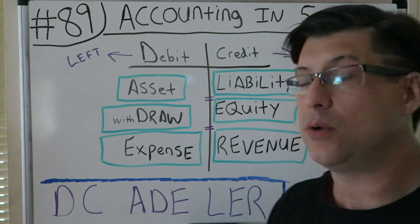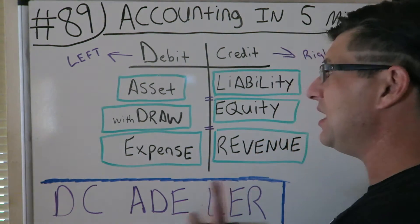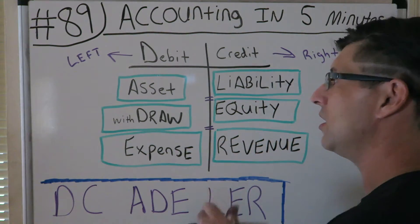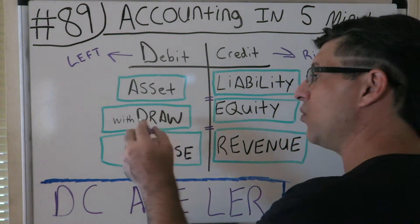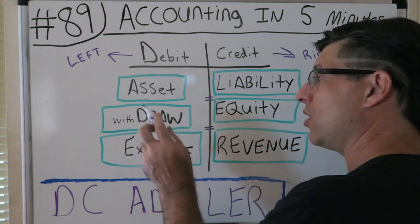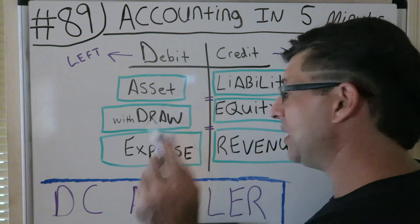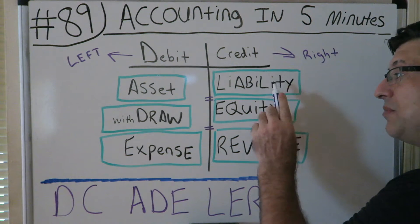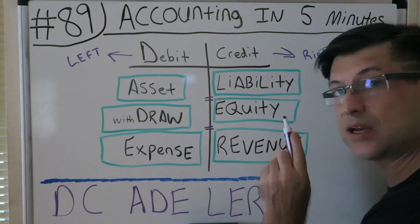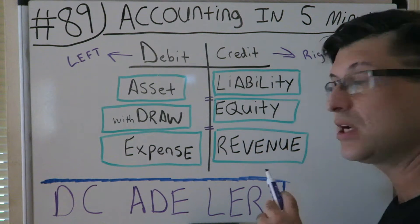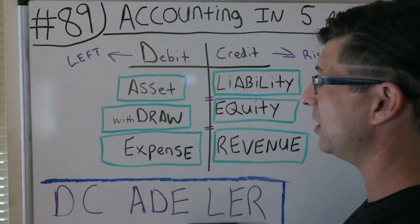Every transaction is also going to be either an asset, a withdrawal or draw, an expense, a liability, an equity, or a revenue. So it's going to be one of these six account types.